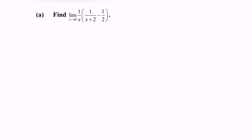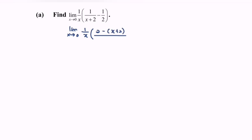First, what we have to do is equate the denominators. So the limit when x approaches 0 — we have 1 over x multiplied with the common denominator giving us 2 minus (x plus 2) over (x plus 2) multiplied with 2.